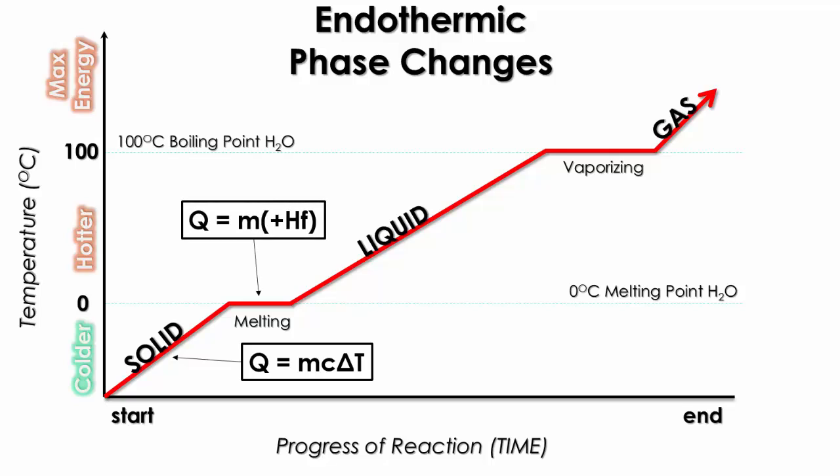When we get to the melting phase, we're going to be using Q = MHF, which states that the mass of our sample undergoing the phase change is multiplied by its heat of fusion value. When we have a liquid sample that is changing temperature, we again use the Q = MCΔ T formula.